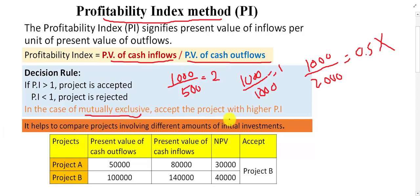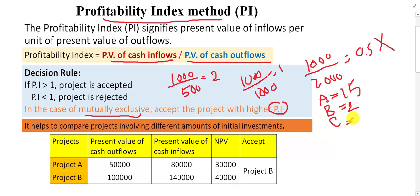In the case of mutually exclusive projects, if you have several projects — for example Project A, Project B, and Project C — the project which gives the maximum or higher PI should be accepted. For example, if PI of A is 1.5, PI of B is 2, and PI of C is 3, then Project C should be accepted. If there is a limitation of funds, the one with the maximum PI should be selected.